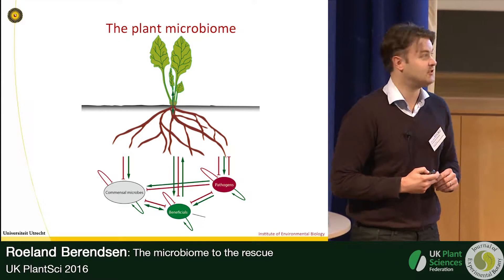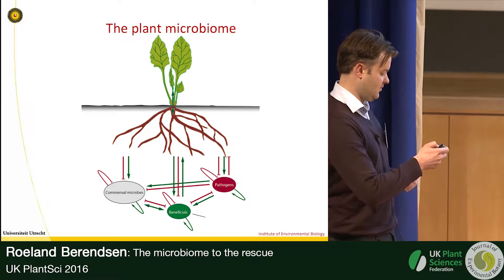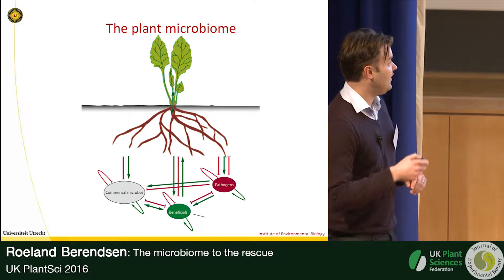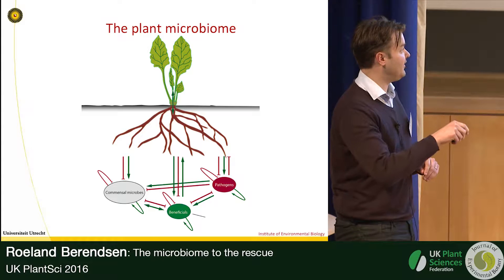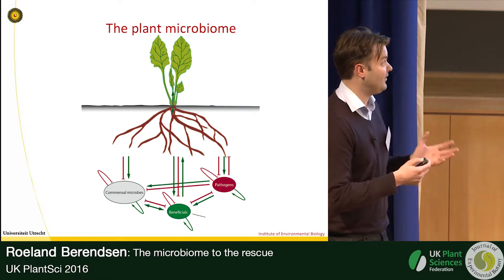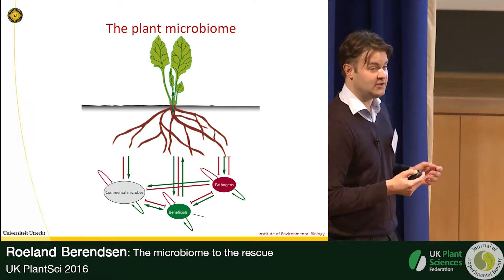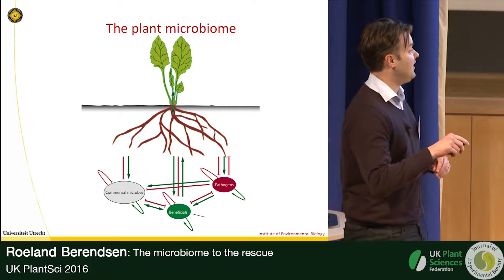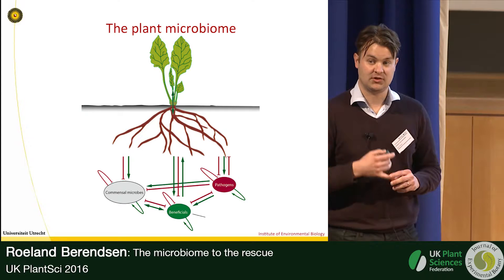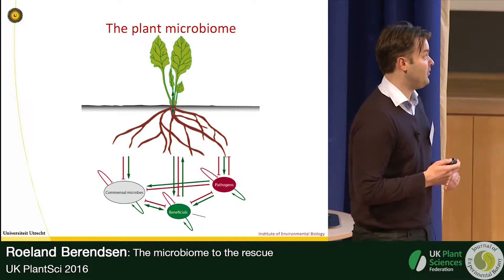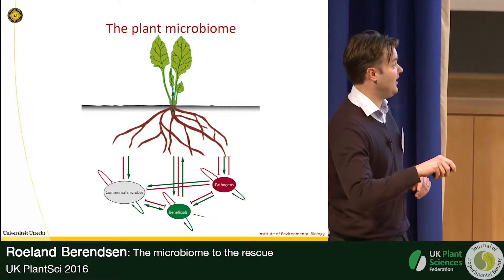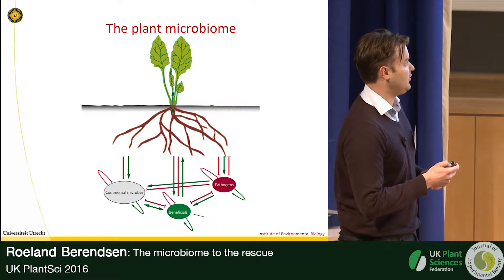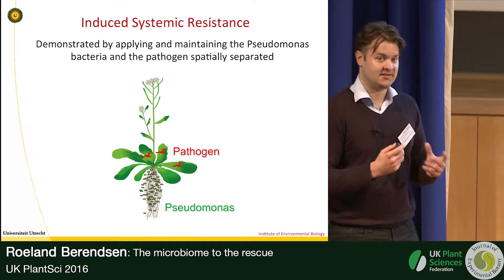In the rhizosphere there are some pathogens present, and the majority of microbes might not have a direct effect on the plant or the pathogen. But some microbes are beneficial to the plant because they either inhibit pathogens directly — by competition for nutrients or production of antimicrobial compounds — or indirectly by inducing systemic resistance in the plant.